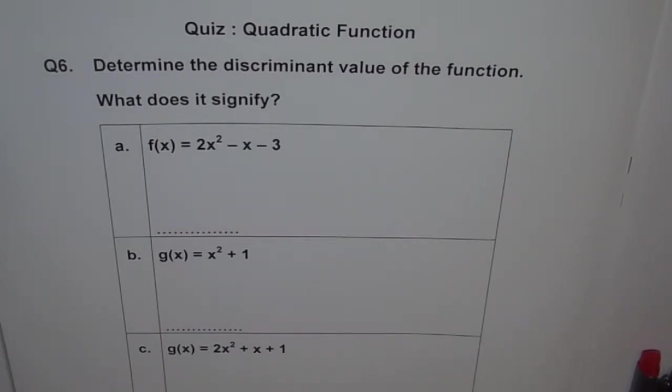We are given 3 parts. Part A: f(x) = 2x² - x - 3. Part B: g(x) = x² + 1. Part C: g(x) = 2x² + x + 1.